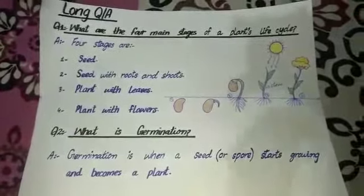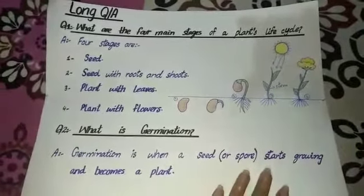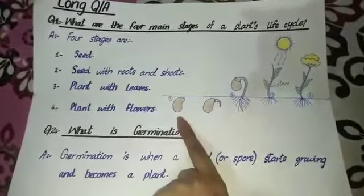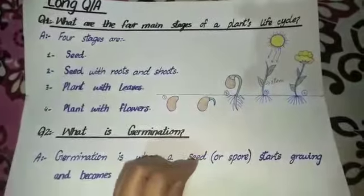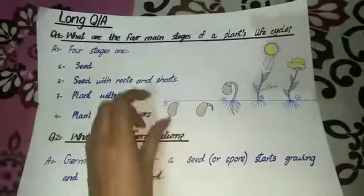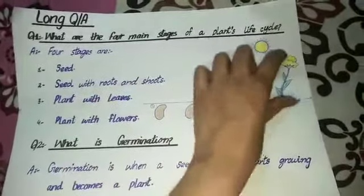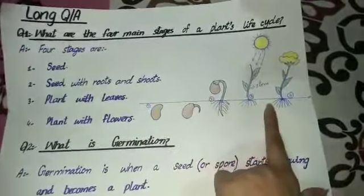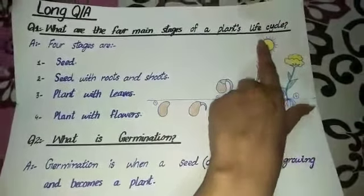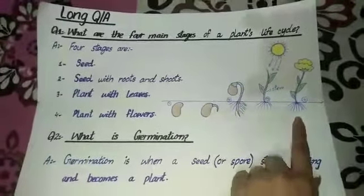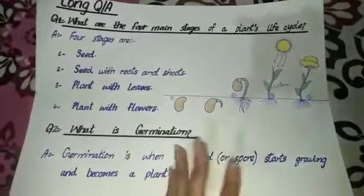پہلے میں آپ کو life cycle کے بارے میں بتاتی ہوں کہ life cycle کیا ہوتا ہے۔ جب ہم ایک seed کو کسی moist soil میں plant کر دیتے ہیں، seed کو plant کرنے سے لے کر جب تک وہ ایک پورا fully grown plant نہیں بن جاتا، اس time تک اس کی پوری life میں جتنی بھی changes ہوتی ہیں وہ سب اس کے life cycle میں آتی ہیں۔